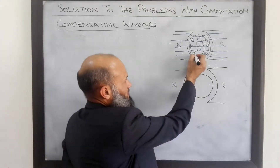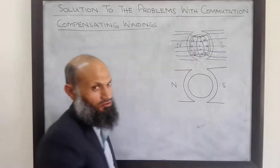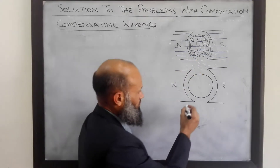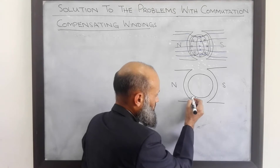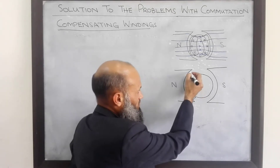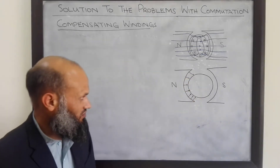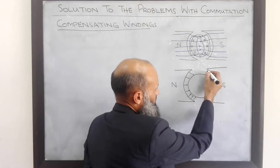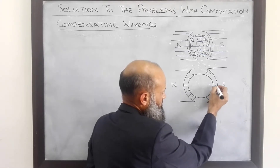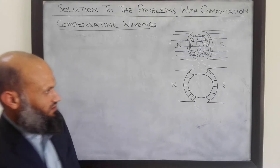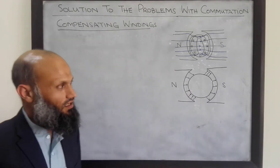At one end of the pole, the MMF due to main poles and the MMF due to the rotor windings are in the same direction; therefore MMF and flux density will increase at that end. At the other end, flux density will decrease because the two MMFs are in opposite directions. Likewise for the other pole, flux will increase on one side and decrease on the other. So flux distribution along the surface of the rotor is no longer uniform. This effect is called armature reaction.